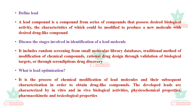The stages involved in identification of a lead molecule include random screening from small molecular library databases, traditional methods, rational drug design through validation of biological targets, or serendipity. Lead optimization is the process of chemical modification of lead molecules and their subsequent characterization in order to obtain drug-like compounds.